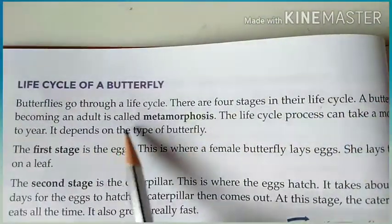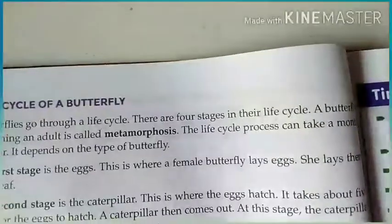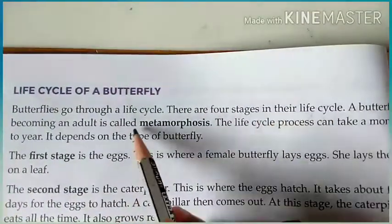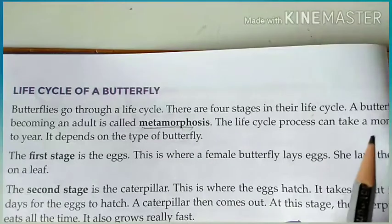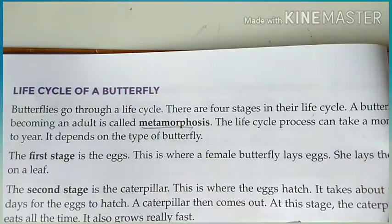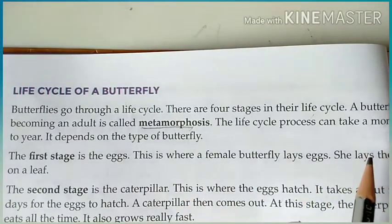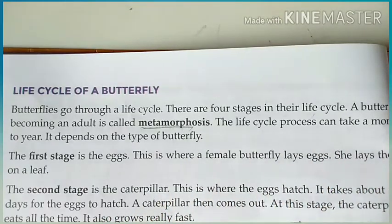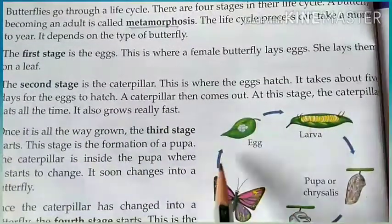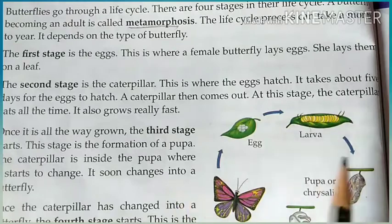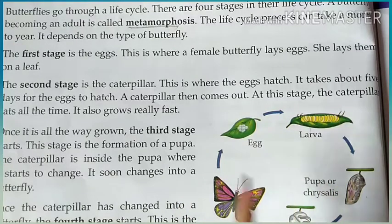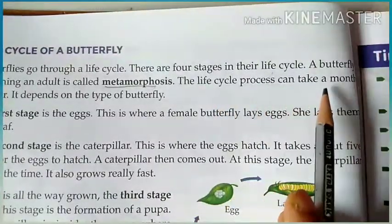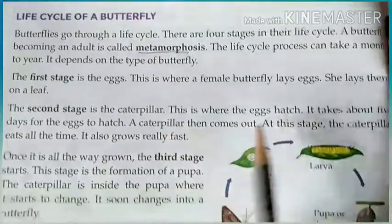A butterfly becoming an adult is called metamorphosis. Metamorphosis is the transformation of an insect from an immature form to an adult form. The life cycle process can take a month or a year depending on the butterfly.